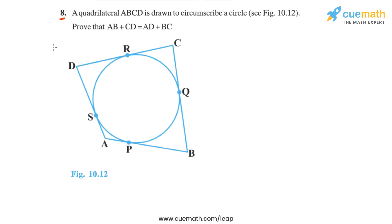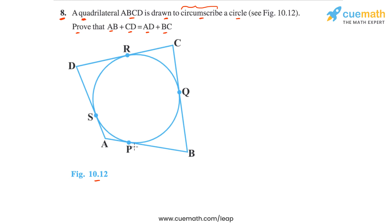In question 8 of this exercise, we have figure 10.12 in which a quadrilateral ABCD is drawn to circumscribe a circle. Circumscribe means that all four sides of the quadrilateral touch the circle inside it. We have to prove that AB plus CD is equal to AD plus BC — that is, the opposite sides of the quadrilateral have the same sum. AB and opposite side CD have the same sum as AD and opposite side BC.